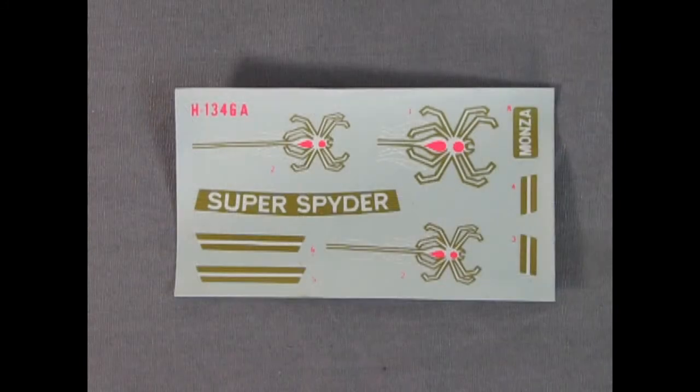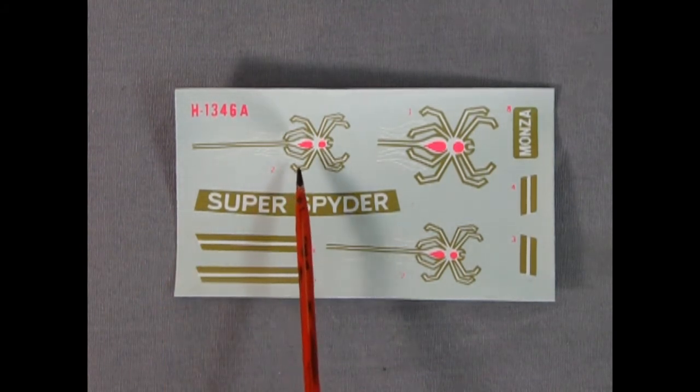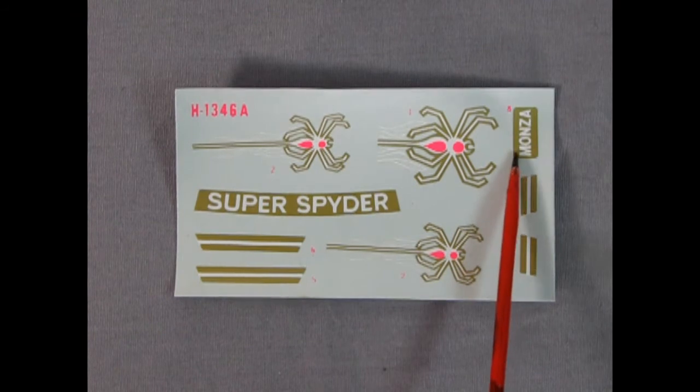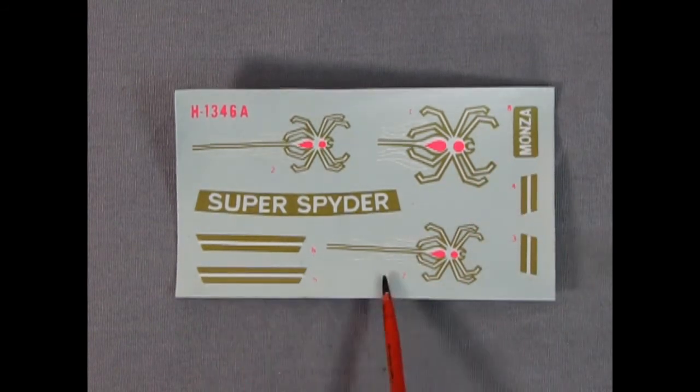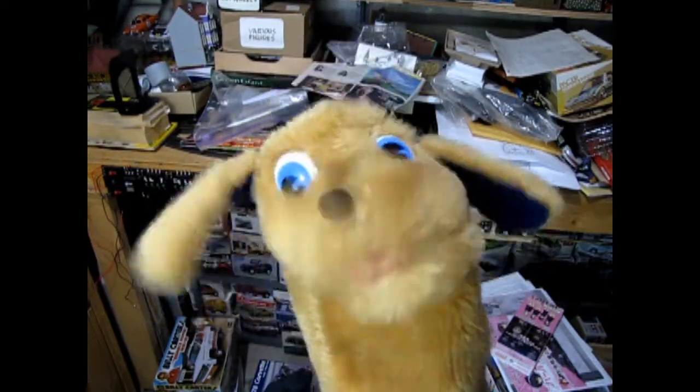Last but not least we have our decal sheet and as you can see these are very simplistic looking decals but they do have this really neat neon pink in here that's really bright actually. So you've got a Monza, this is your license plate, there's your side stripes and the spiders as well as the window sticker. And that completes our look at our 1978 Chevy Monza Super Spider model kit by Revell. And if you want to know where to find some great model kits for sale right now, why not check out our Monster Hobbies website by clicking on this link up above. Well Danny, I sure hope you enjoyed making this video with me. Oh boy I sure did, and we'll see you all on the next video.